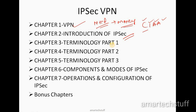Then we'll move towards chapters three, four, and five, which cover terminologies in parts one, two, and three respectively. I'll be focusing more on these three chapters because people working with IPSec VPN may be aware of some terms — like RSA, encryption, decryption, plaintext, ciphertext, SHA, and hashing — but a lot of people get confused. So I've divided those terminologies into three parts to explain them clearly.